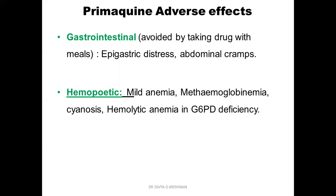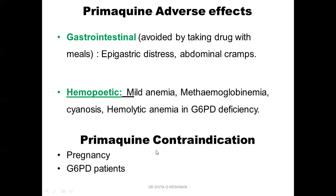The adverse effects of primaquine are not many. Mostly gastrointestinal: epigastric distress and abdominal cramps, which can be minimized by taking the drug along with meals. Other hematopoietic ADRs include mild anemia, methemoglobinemia, cyanosis, and hemolytic anemia in G6PD-deficient patients. Primaquine is contraindicated in pregnancy and in G6PD-deficient patients.